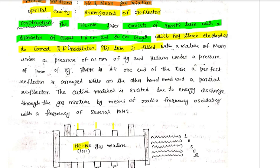This tube is filled with a mixture of neon under a pressure of 0.1 mm of mercury and helium under a pressure of 1 mm of mercury. So inside this tube we have a helium-neon gas mixture.